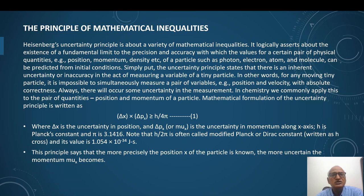Next we talk about principle of mathematical inequalities. Heisenberg's uncertainty principle is about a variety of mathematical inequalities. It logically asserts about the existence of fundamental limit to the precision and accuracy with which the values of certain pair of physical quantities such as position, momentum, density, etc. of a particle such as proton, electron, atom, molecule can be predicted from initial conditions. Simply put, the uncertainty principle states that there is an inherent uncertainty or inaccuracy in the act of measuring a variable of a tiny particle.